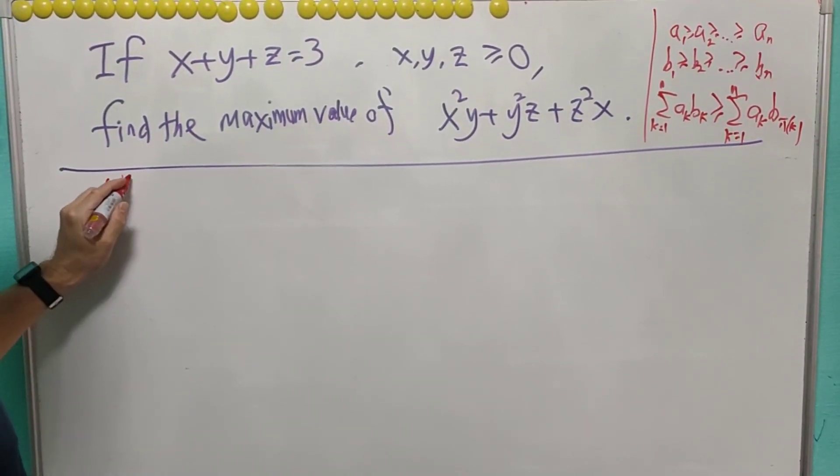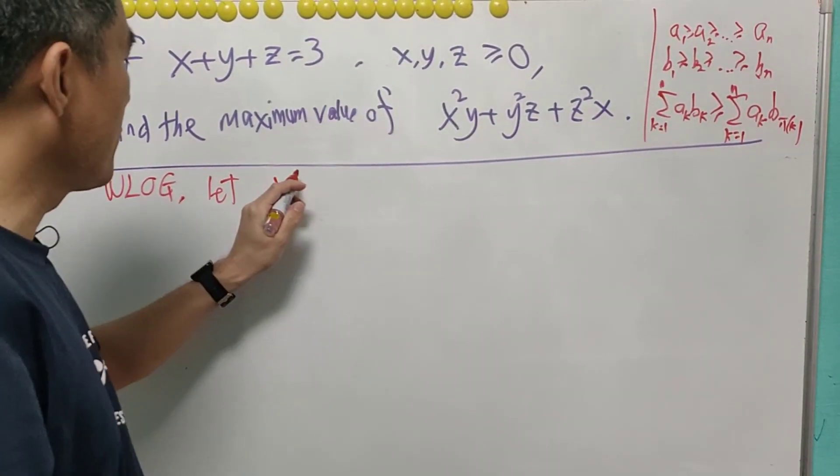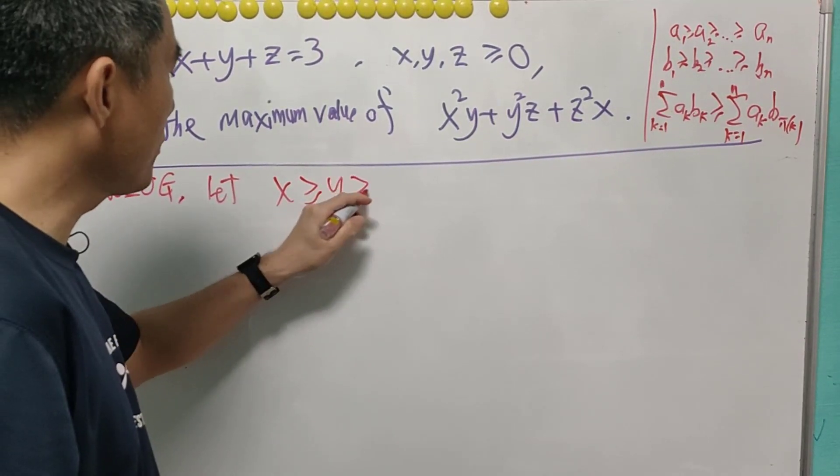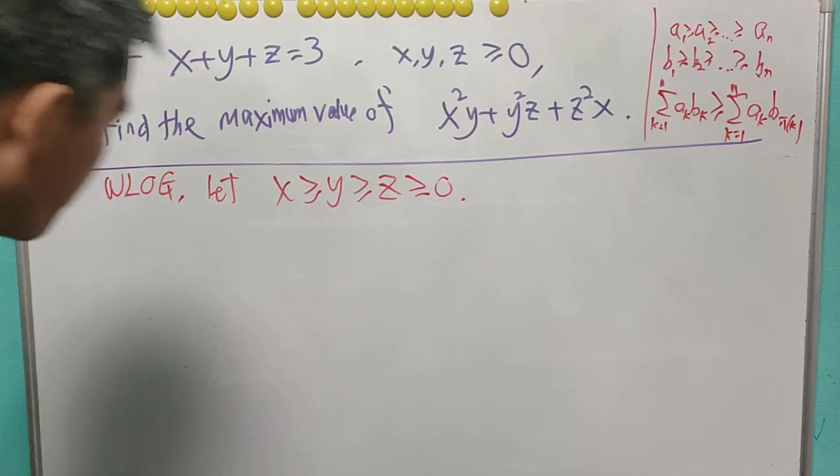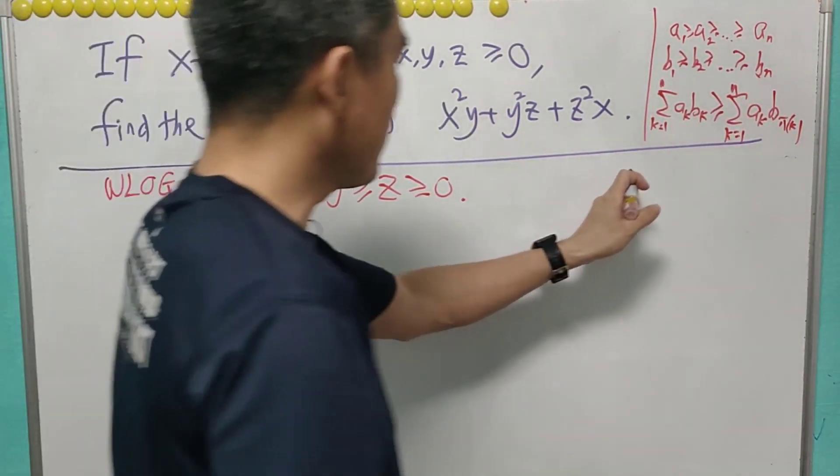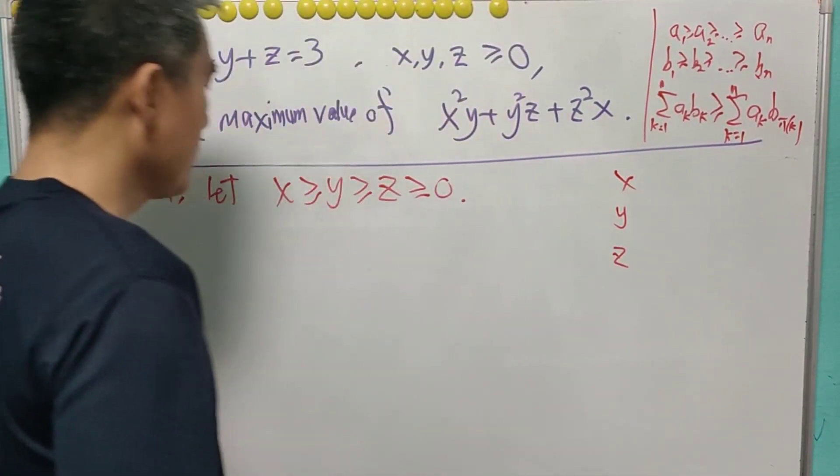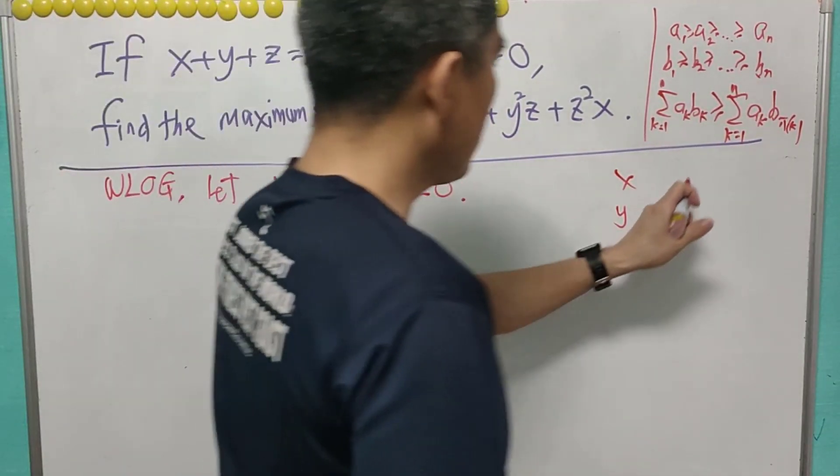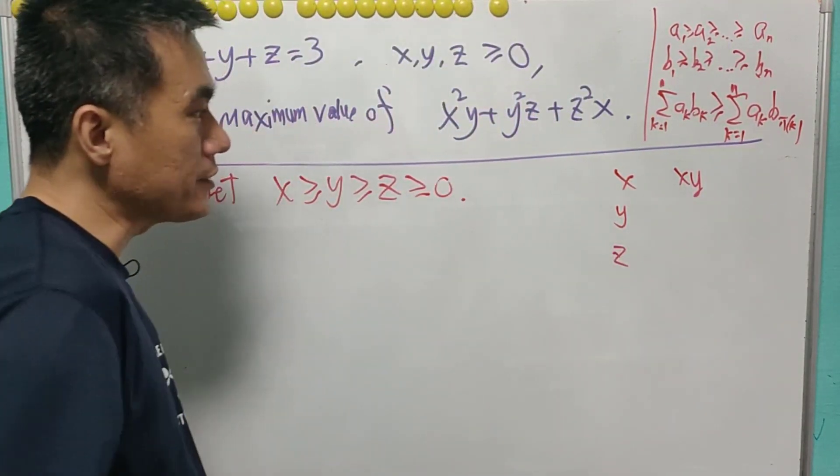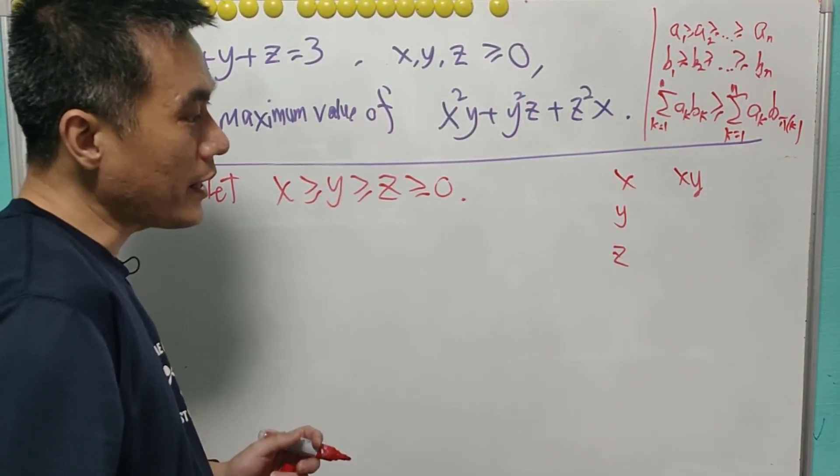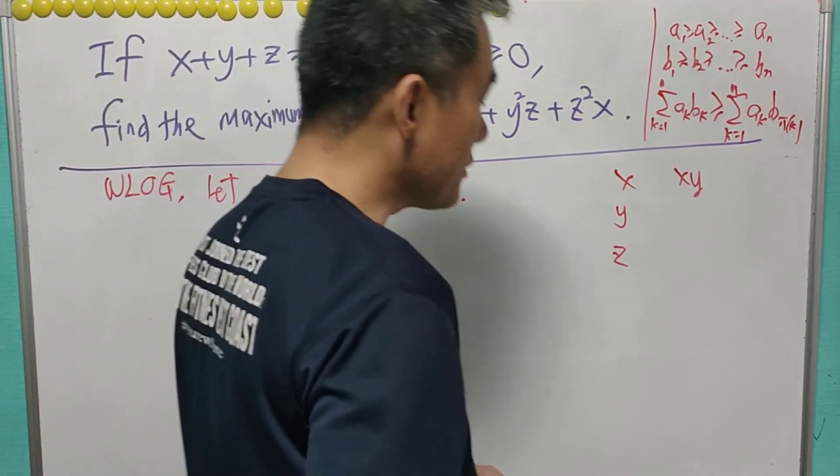So for this question, without loss of generality, we will let X to be the largest value, followed by Y, and followed by Z. And they are all greater than equals to zero. And because of this, then we know that X is the highest value, followed by Y, followed by Z. And therefore, if you take two terms from XYZ, it can be XY, YZ, and ZX. So XY will be the maximum value among these three, followed by XZ, and the last one will be YZ.